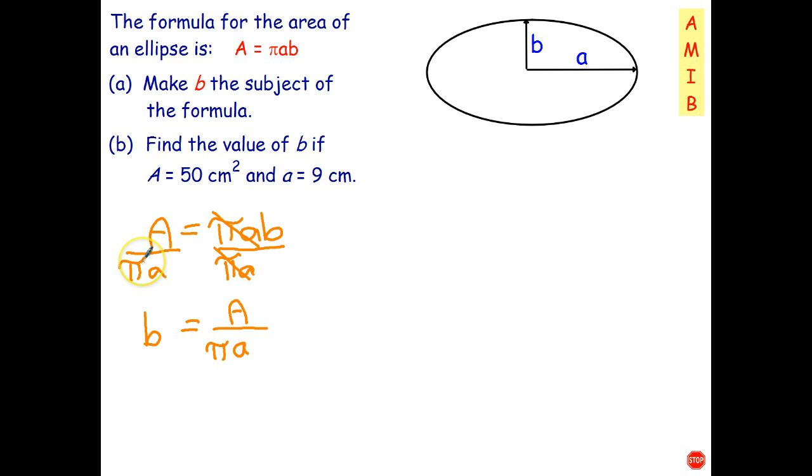So the message from this question here, the lesson from this question is if you've got a number of factors that you're multiplying by, in this case b, you can divide by both of those in one step.